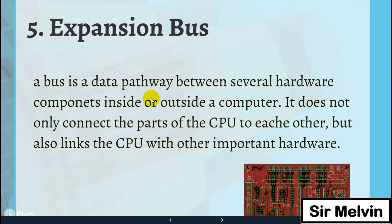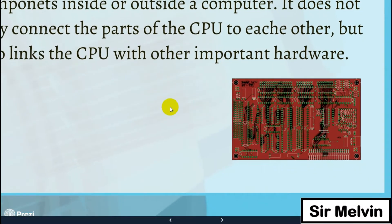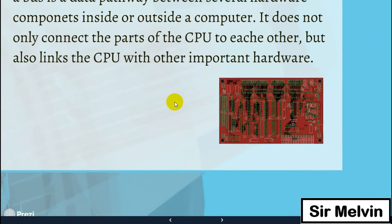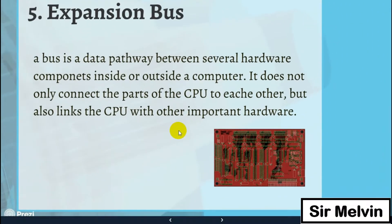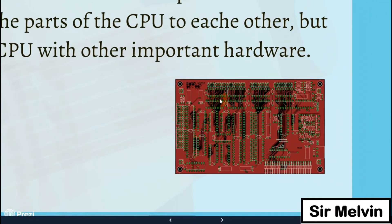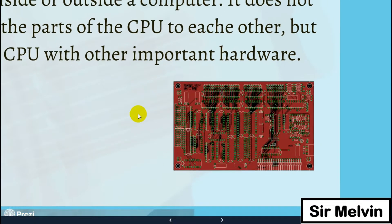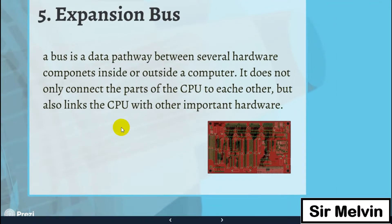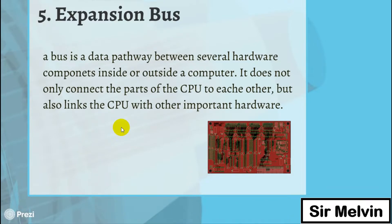Next is the expansion bus. A bus is a data pathway between several hardware components inside or outside the computer. It does not only connect the parts of the CPU to each other, but also links the CPU with other important hardware. The expansion bus is located near the CPU and is a part of the motherboard.